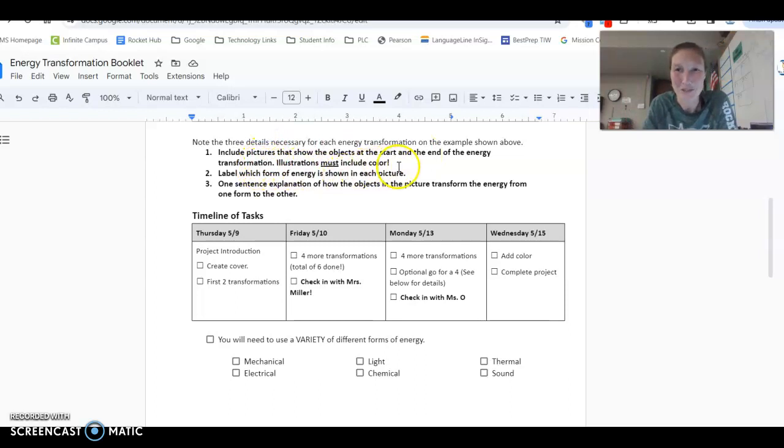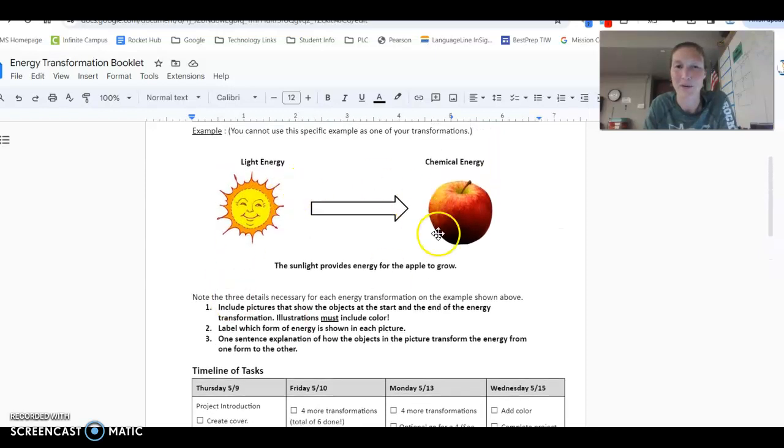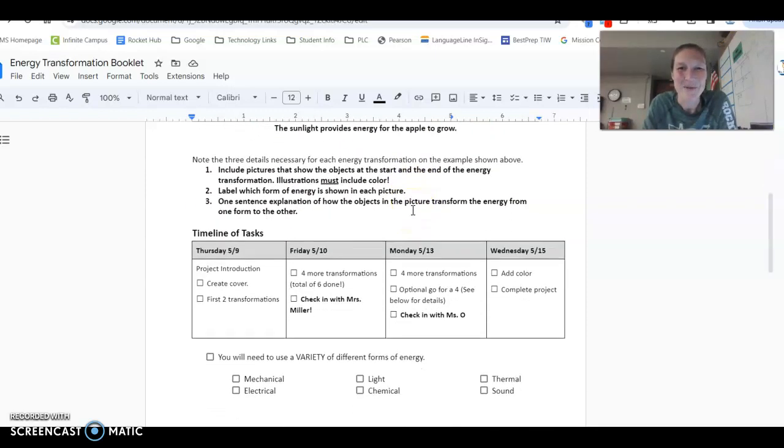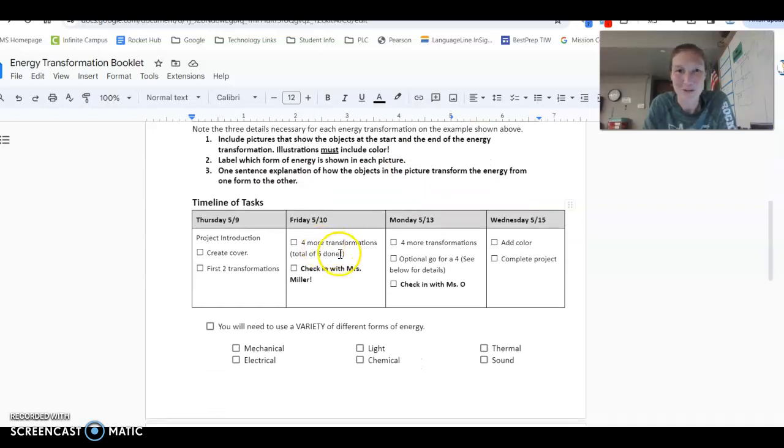Label which form of energy is used in each picture. And one sentence explanation on how the objects in the picture transform their energy from one to the other. You can always look back at our example here. Now remember, you can't use that specific one. Good try. But today you're going to do four more for a total of six.